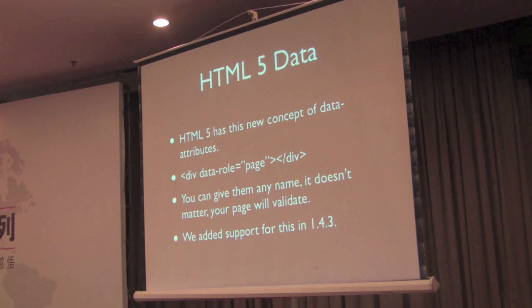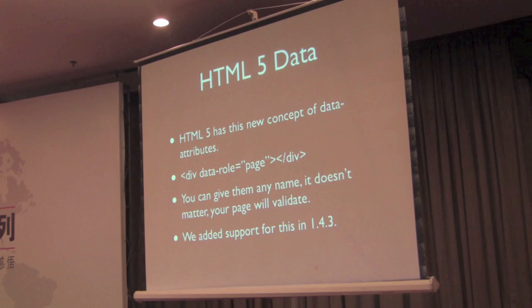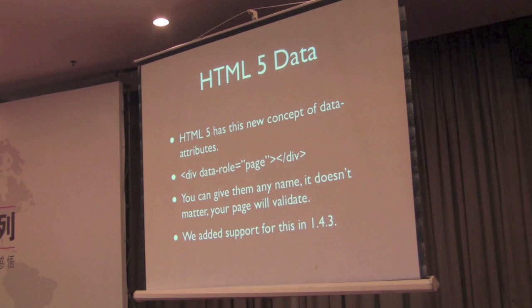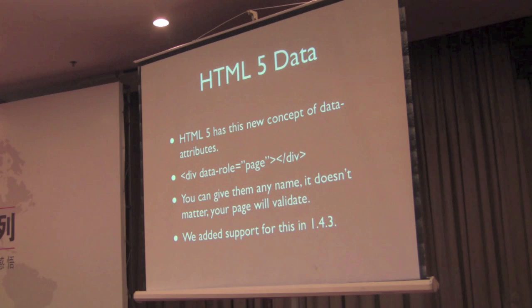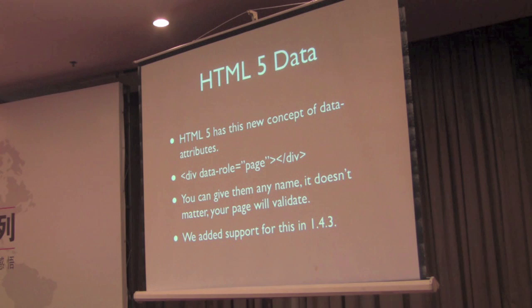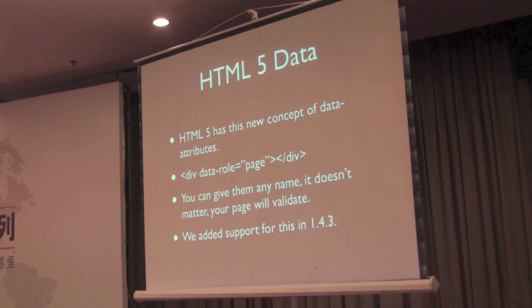One thing that we started to do is embrace more of HTML5, starting to use features that are provided to increase the usability of jQuery as a whole. For example, there's this new thing in HTML5 called data attributes. Data attributes allow you to put attributes on elements that are prefixed with data dash. When you do that, the validator will handle those in a way that won't throw errors. This is really nice because you can have all sorts of attributes in your page that you can use for anything, with no restriction. This is actually from jQuery Mobile — we use the new data role attribute in a lot of places in jQuery Mobile.